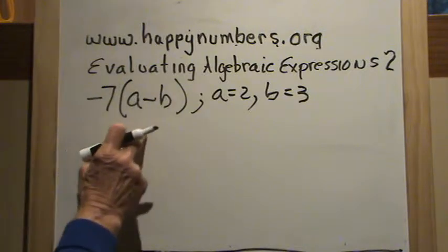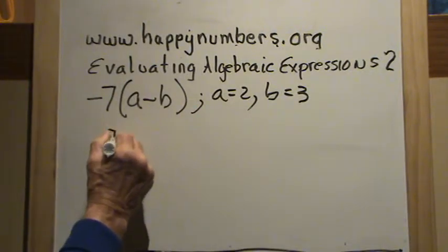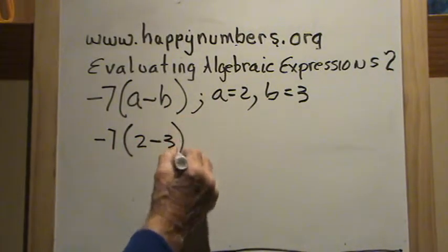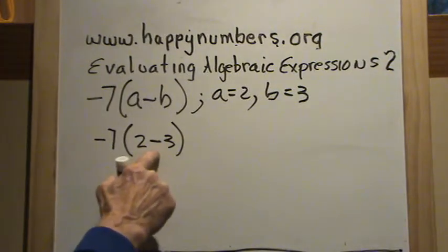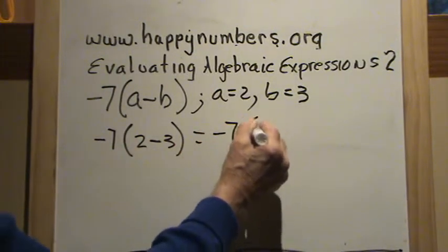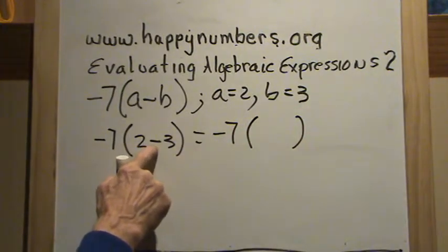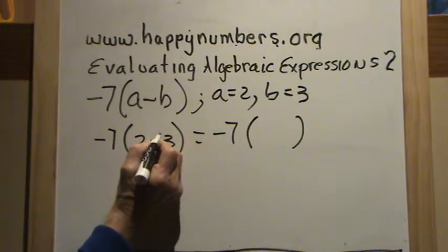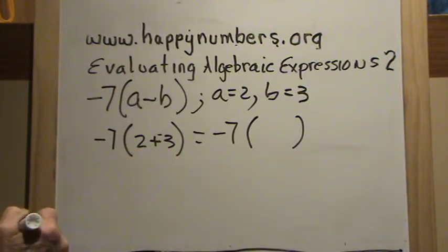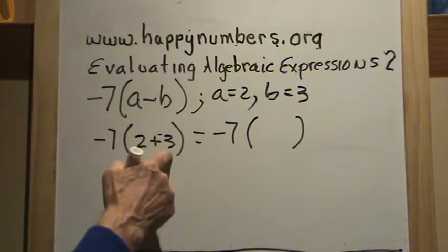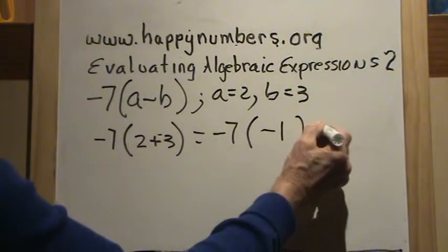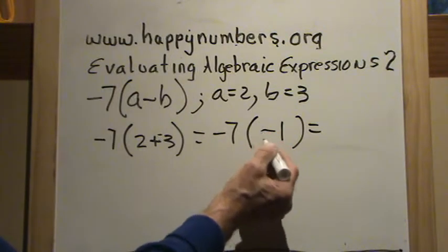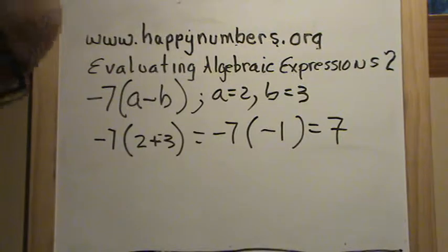First thing we do is substitute: negative 7 times the quantity 2 minus 3. Now we do inside the parentheses. We have subtraction of integers, which means we add the opposite — positive 3 becomes negative 3, and this becomes an addition problem. So 2 plus negative 3 is negative 1. Now we do the multiplication: negative 7 times negative 1. Negative times negative is positive, so my answer is simply 7.